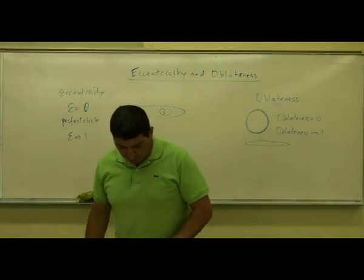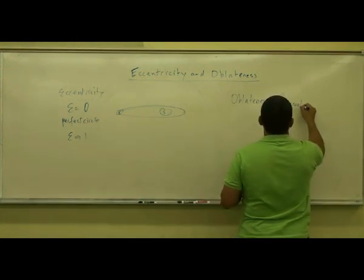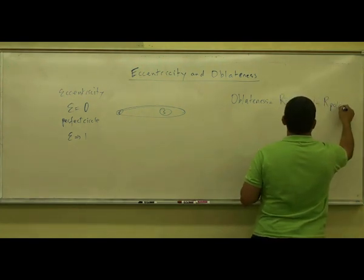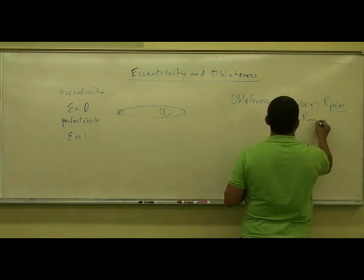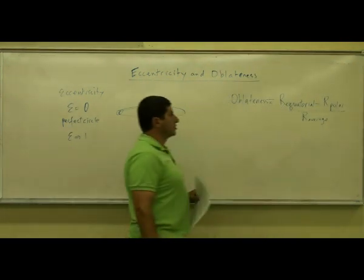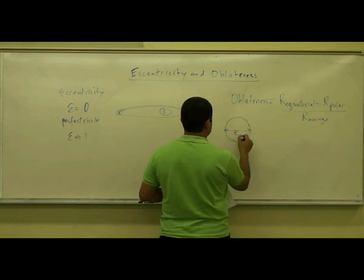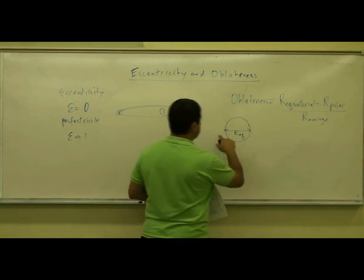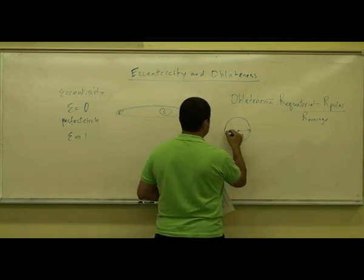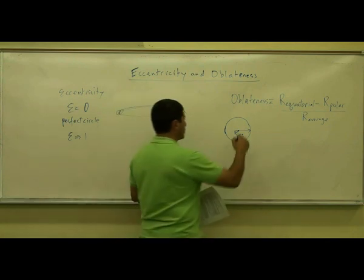Now let's look at the actual formal definition. For oblateness, it's the equatorial radius minus the polar radius, divided by the average radius. The equatorial radius is the distance from the center to the edge along the equator, and the polar radius is the distance from the center to the edge at the poles.